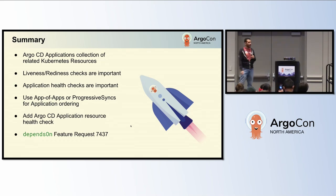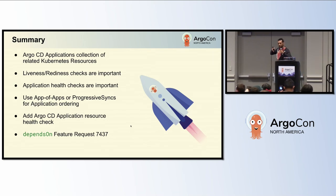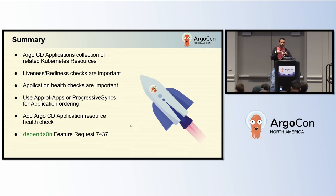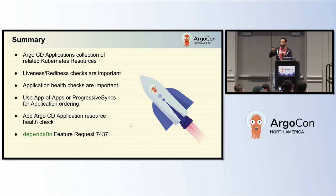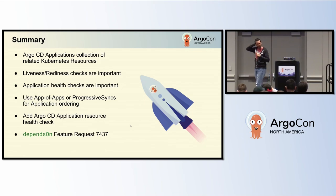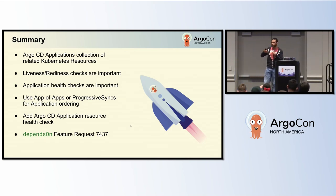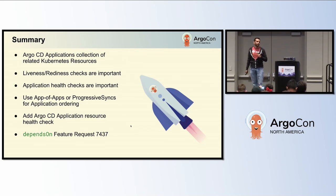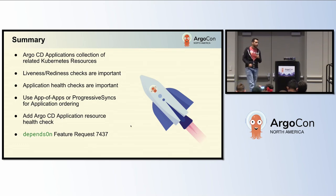Summary: think of Argo CD applications — the application CRD — as a collection of related Kubernetes resources. As a best practice, enable liveness and readiness checks for your deployments, stateful sets, and daemon sets. Application health checks are also important — this is something a lot of people forget when setting up app of apps or progressive syncs. Everyone has internal CRDs they're building or using third-party things that Argo CD doesn't necessarily know about, so you may have to add those health checks. If you find one that isn't in Argo CD, I always encourage people to submit a PR.